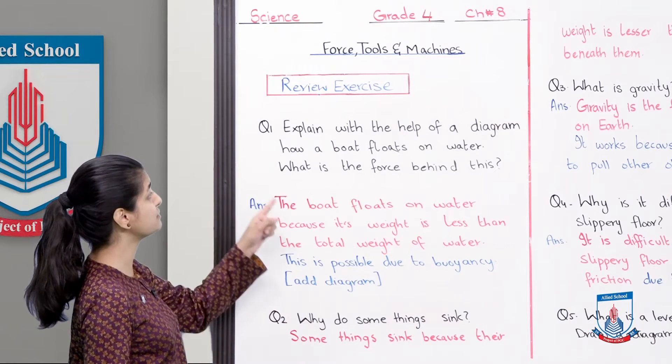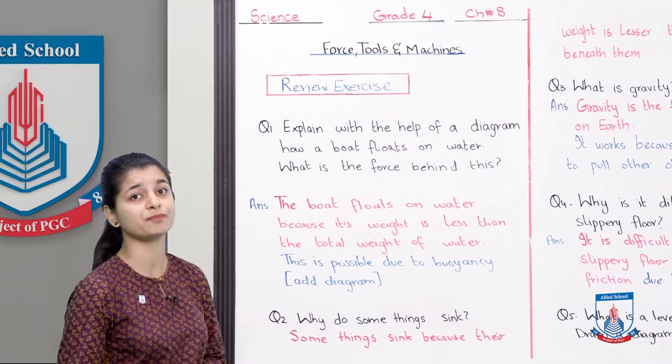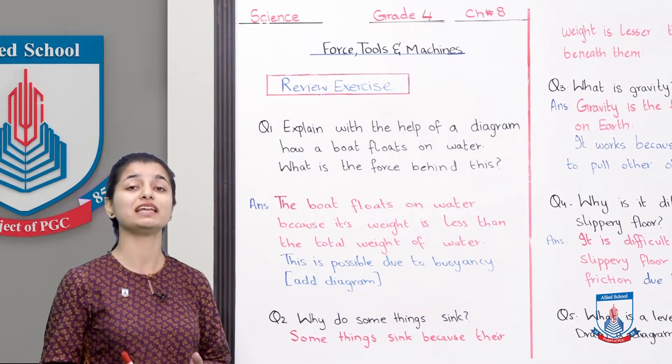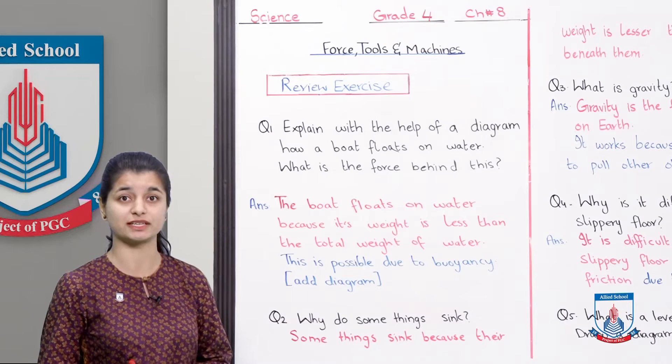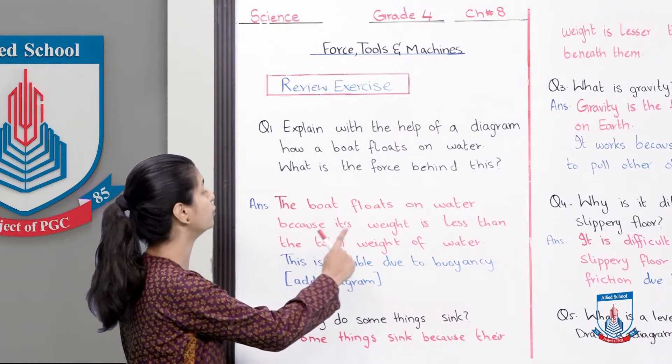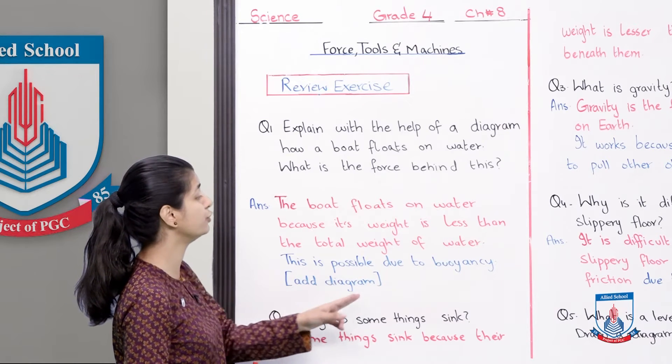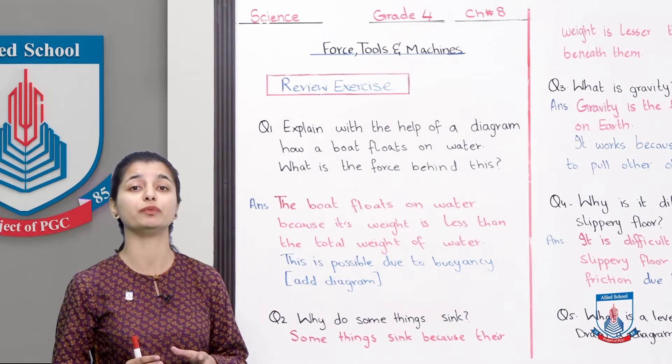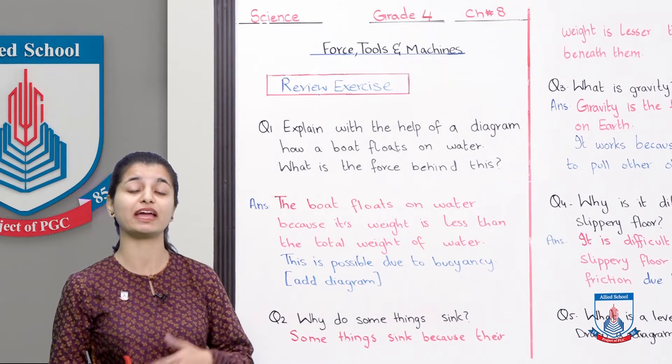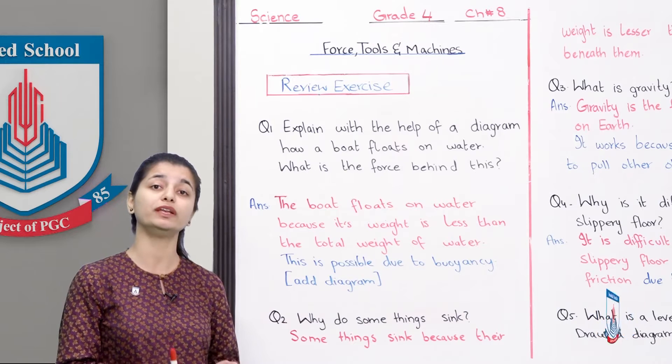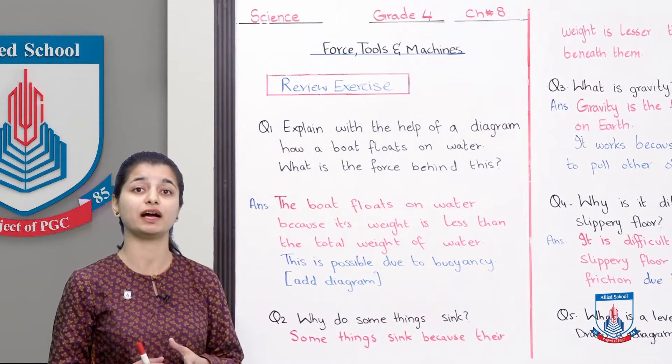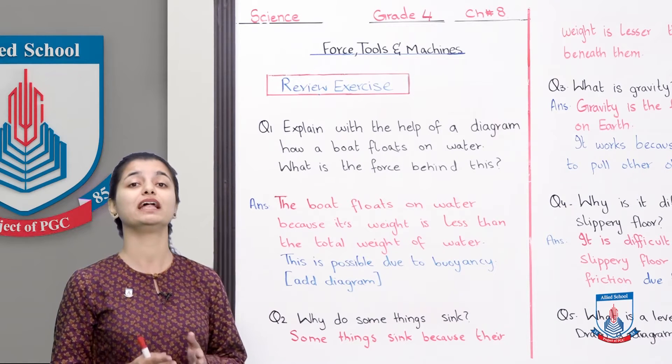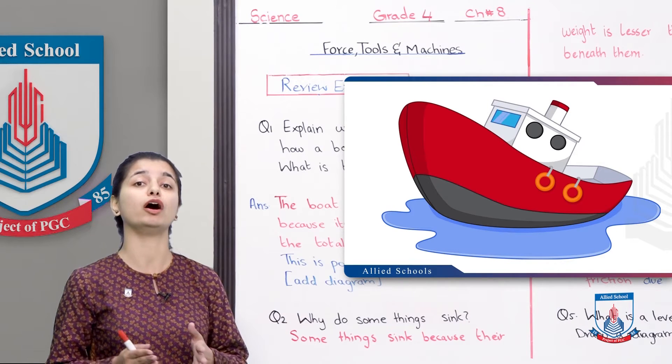The first question says: Explain with the help of a diagram how a boat floats on water. What is the force behind this? The boat floats on water because it experiences a force called buoyancy. The boat floats because its weight is less than the total weight of water displaced. All you have to do is simply draw a boat floating on water.